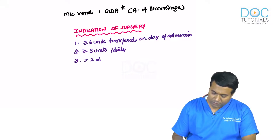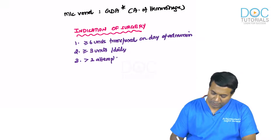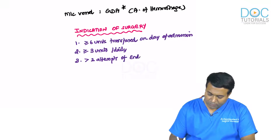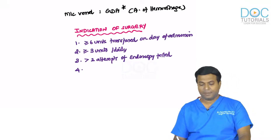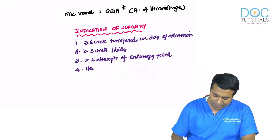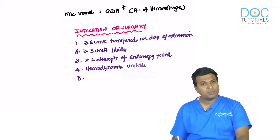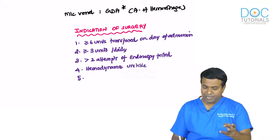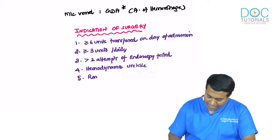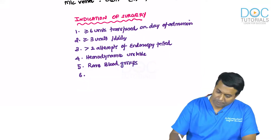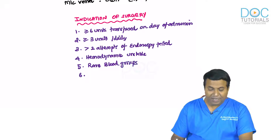Third, more than 2 attempts of endoscopy have failed. Fourth, hemodynamically unstable patient. Fifth, rare blood group. Sixth, patient from a remote/peripheral area who may not be accessible later. The first five are the most important surgical indications.